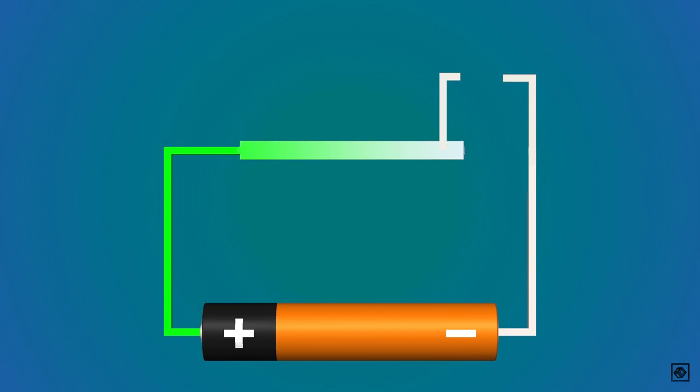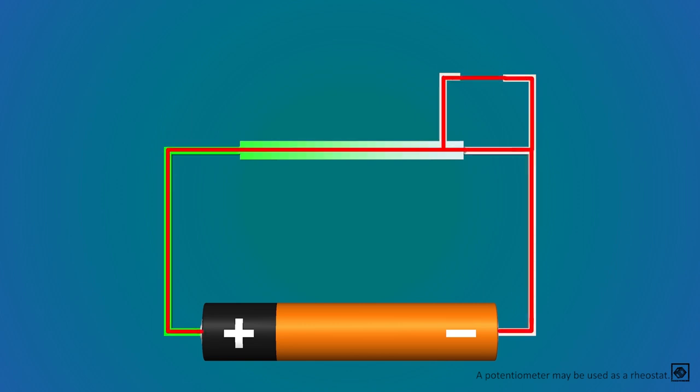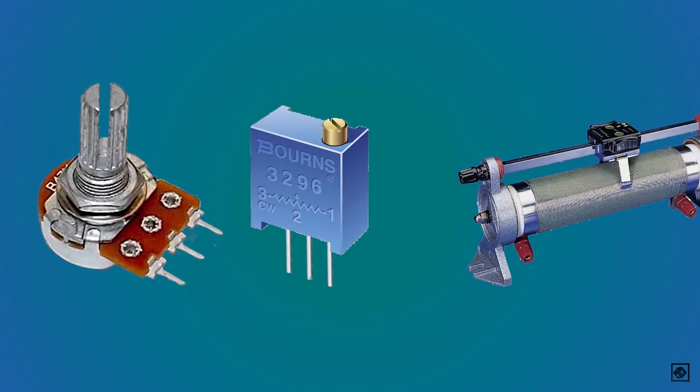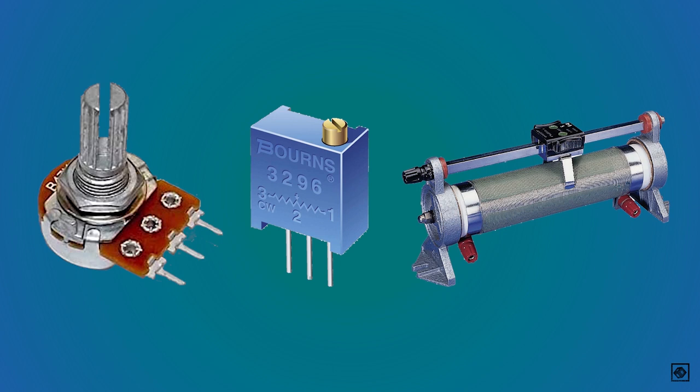Now, if we remove the third terminal, it becomes a variable resistor or rheostat. The potentiometer was connected in parallel, hence it is used to control the voltage. This rheostat is connected in series, thus it is used to control the current. The potentiometer, trimmer, and rheostat are electromechanical devices designed so that their resistance values can be easily changed.